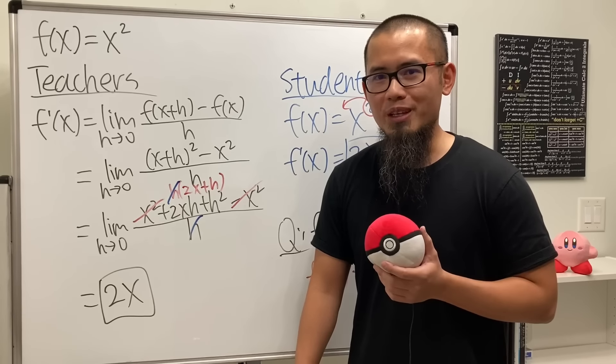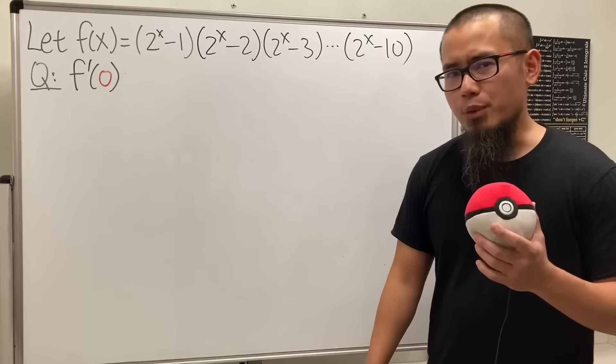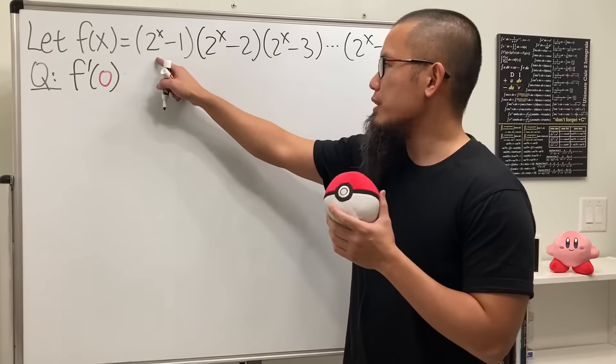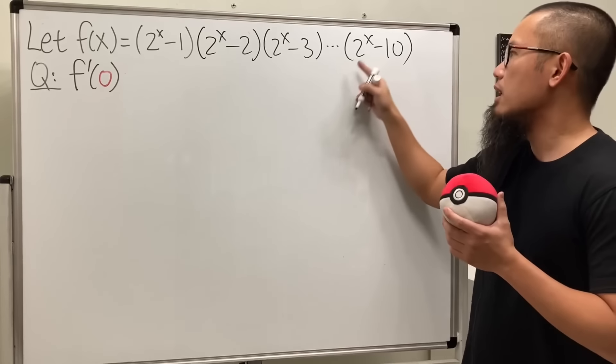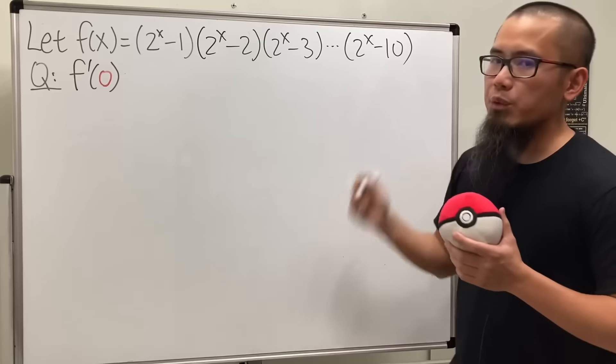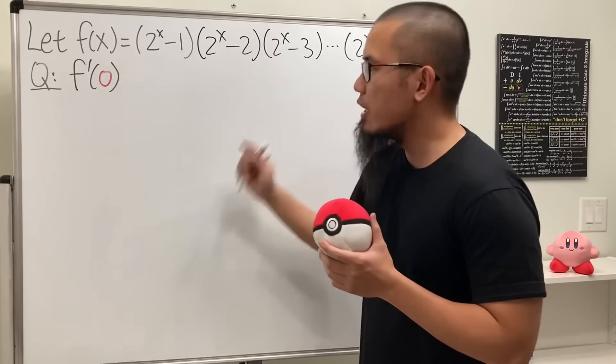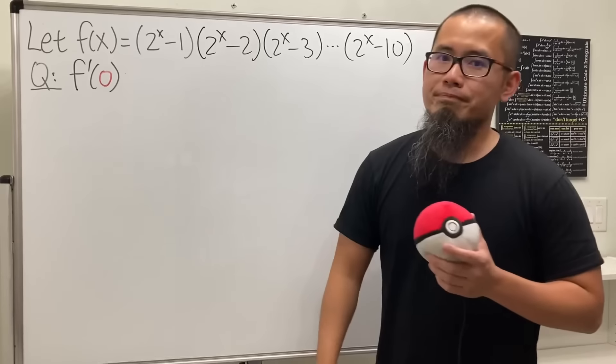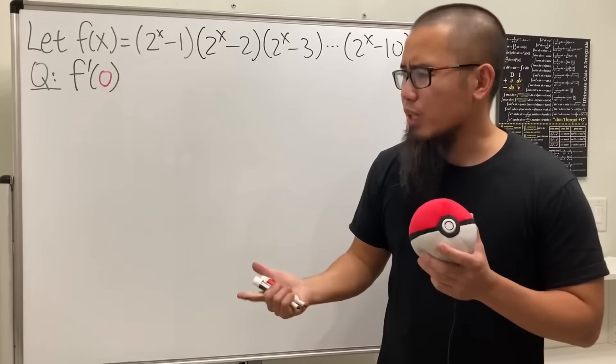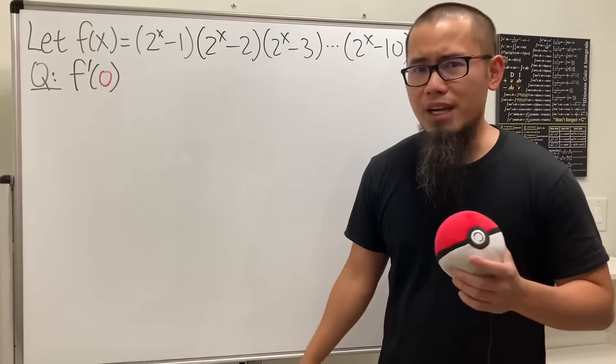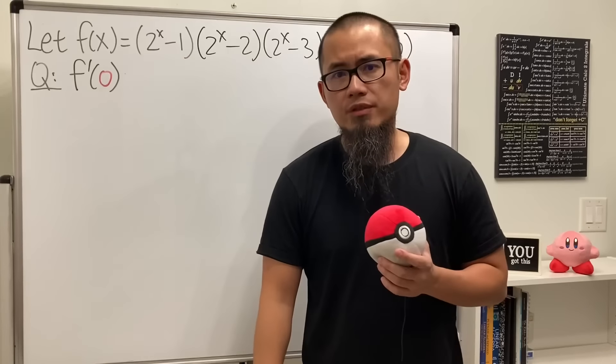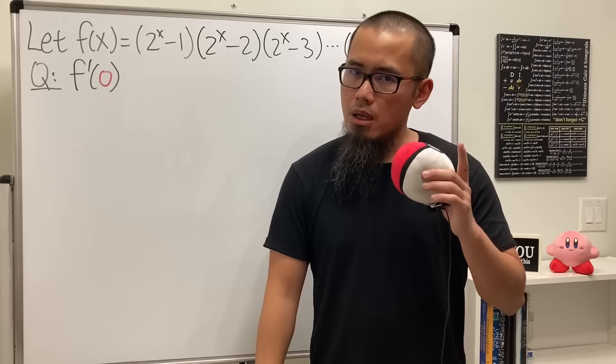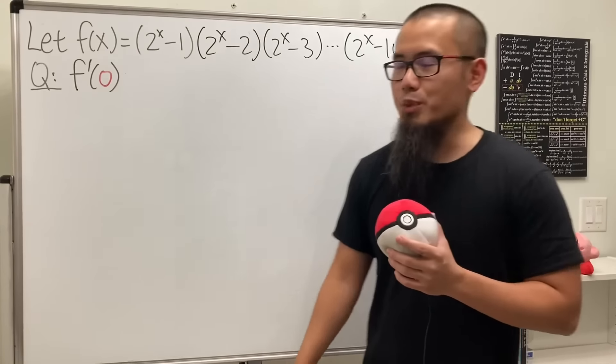I have an example for you guys, so check this out. Here's the question: we have the function 2^(x-1) times 2^(x-2) times 2^(x-3) and so on up to 2^(x-10), and we have to find the derivative of this function at zero. I know you have the power rule, the product rule, and all the other shortcuts, also maybe the implicit differentiation or the logarithmic differentiation, but I believe the easiest way to do this right here is actually to use the definition of derivative.